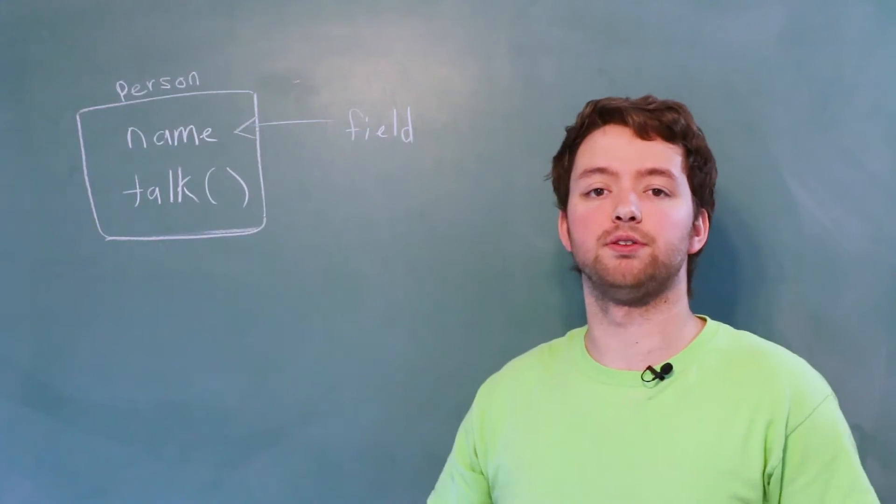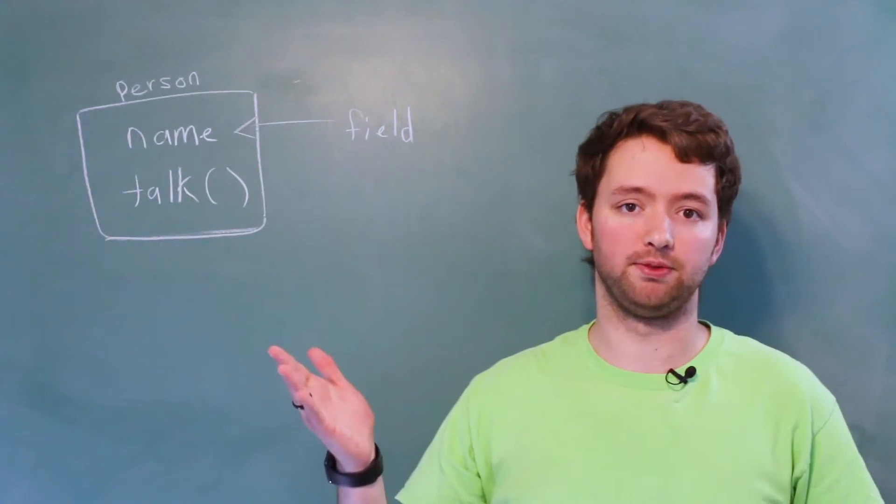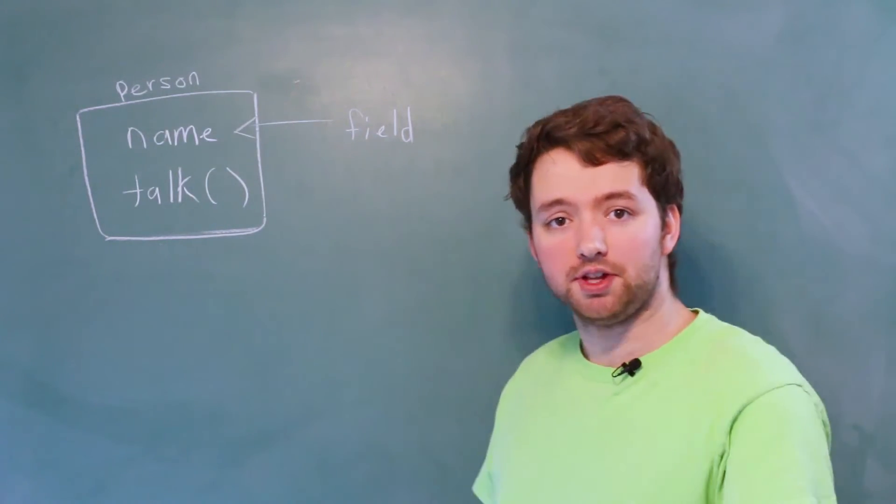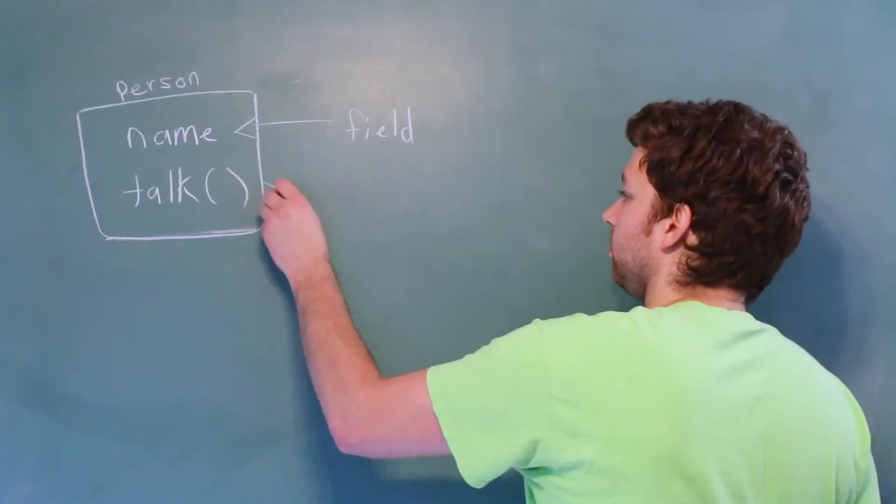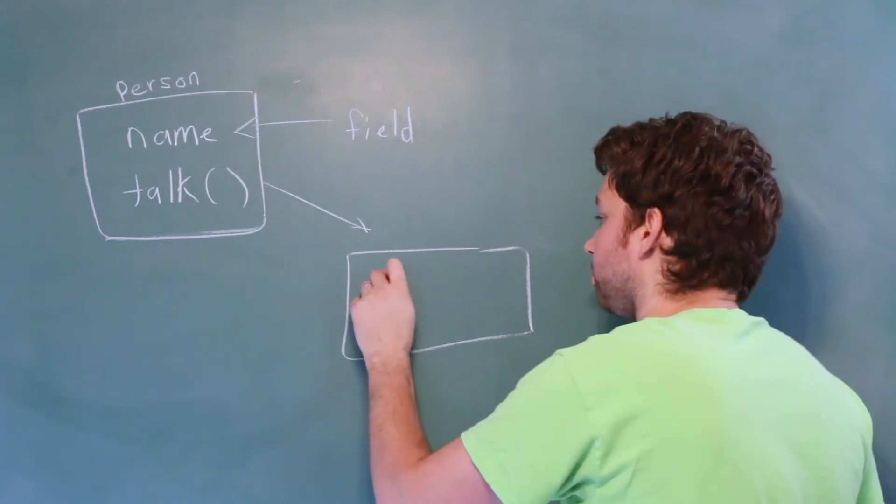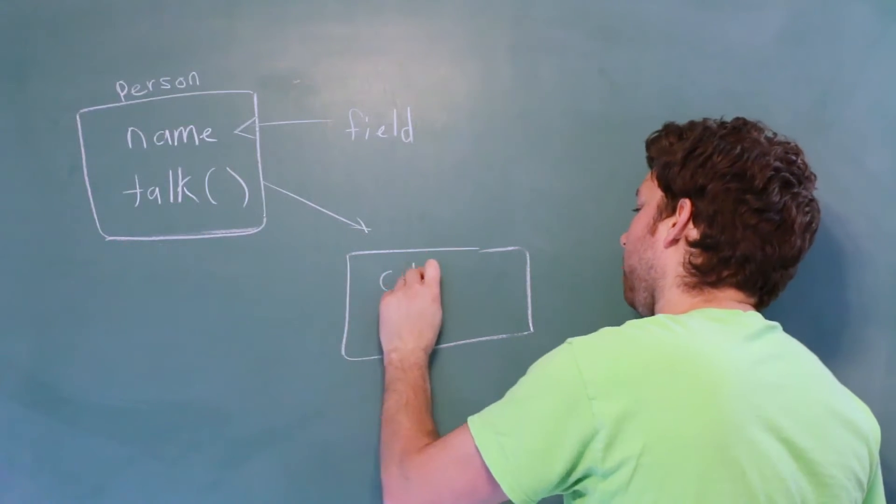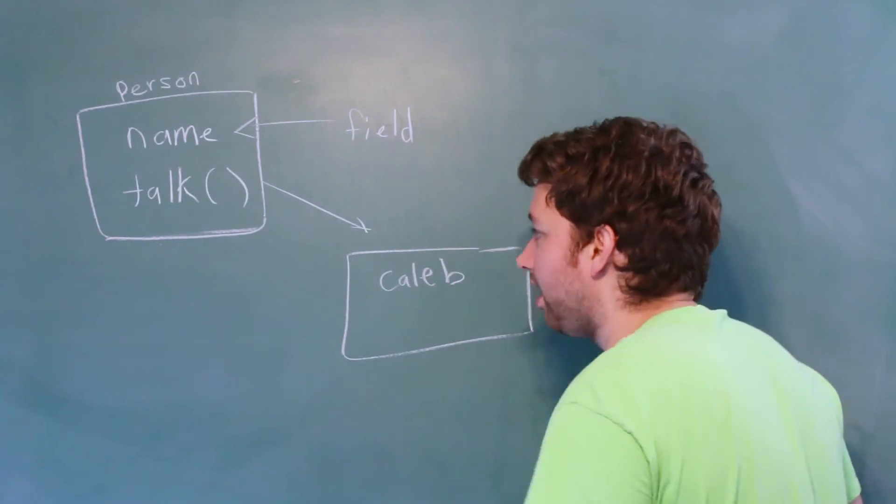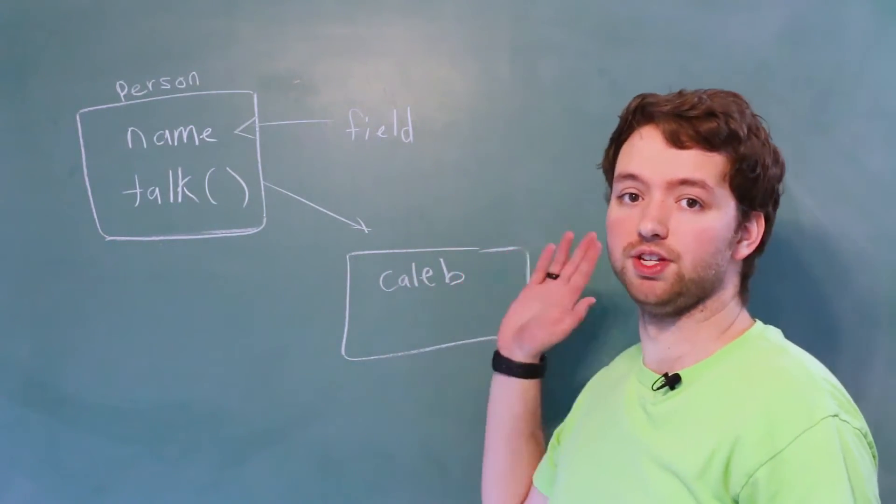So a field is literally just some variable that we can assign a value to. So when we instantiate this class into an object, we can assign a value to this field, such as Caleb. So this is a specific value that's given to this field.